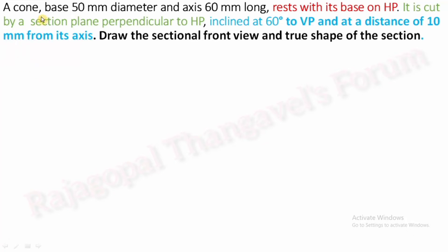Hello students, welcome back. In this video we will discuss a section of solid: a cone. A cone with base 50 mm diameter and axis 60 mm long rests with its base on HP. It is cut by a section plane perpendicular to HP, inclined at 60 degrees to VP, at a distance of 10 mm from its axis. Draw the sectional front view and true shape of the section.